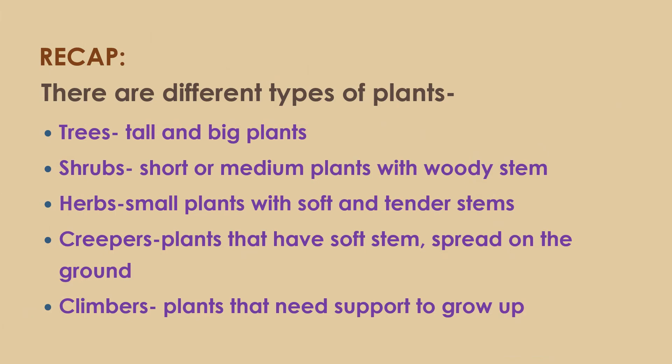In this video we have come to know that there are different types of plants. Some are trees, which are tall and big plants with a strong stem called the trunk. Shrubs are short or medium plants but have a woody stem. Herbs are also small plants but with soft and tender stems. Creepers have soft stems and spread on the ground. Climbers are plants that need support to grow up.